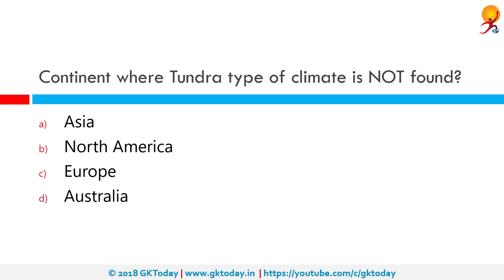Which continent is tundra type climate not found in? The tundra climate is a transitional climate between the subarctic and ice cap climates. Among the options, Australia is the one continent which doesn't have any tundra climate.